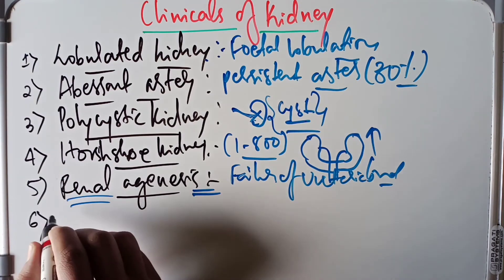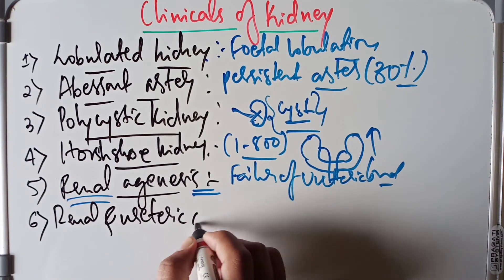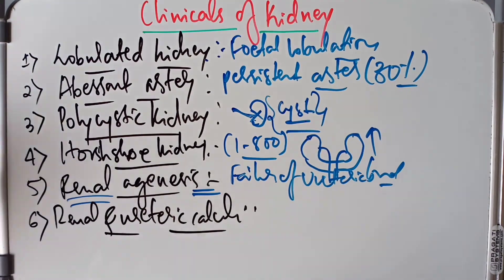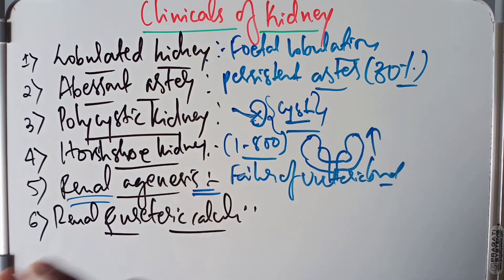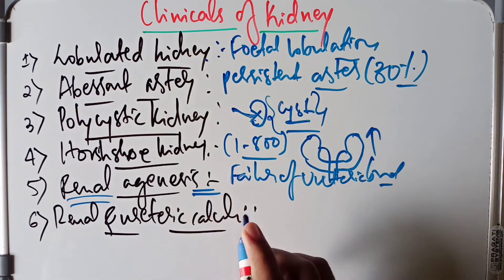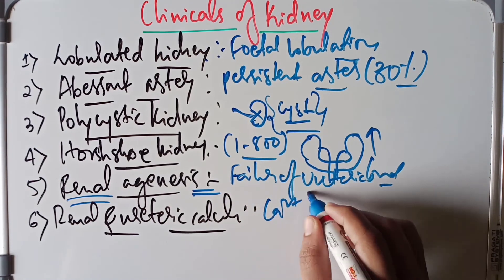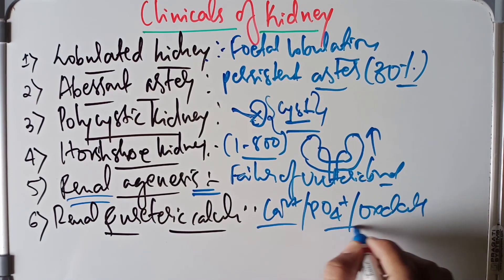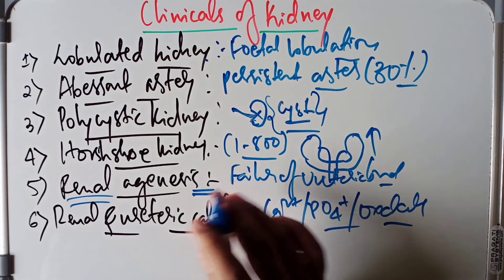The next condition is renal and ureteric calculi, also called urinary tract stones. They occur more frequently in men than in women and are usually associated with sedentary lifestyles. The stones are formed by aggregation of calcium, phosphate, and oxalate, along with urate and other soluble salts within an organic matrix.